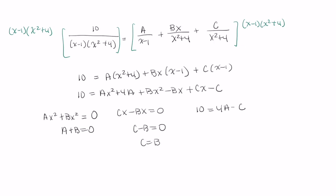Now, I can start working my way to solving what A, B, and C all are. Well, already I know that C is equal to B, so I'm going to rewrite this as 10 equals 4A minus B.